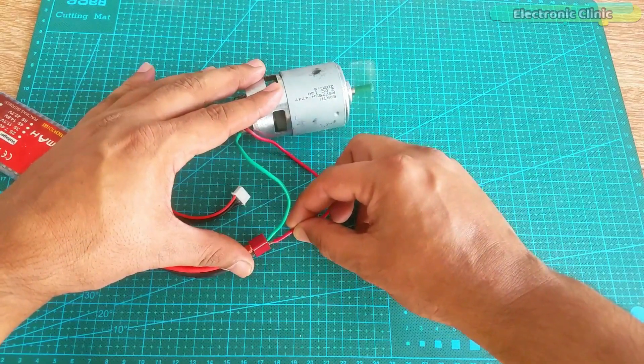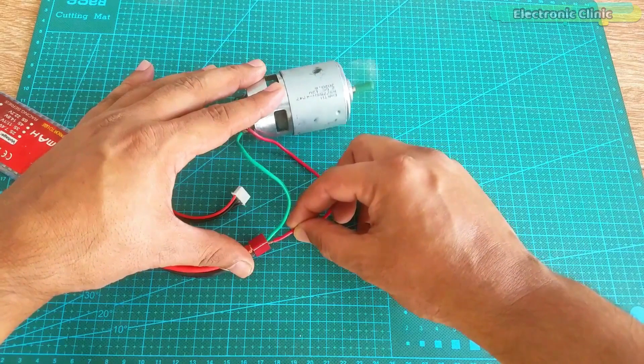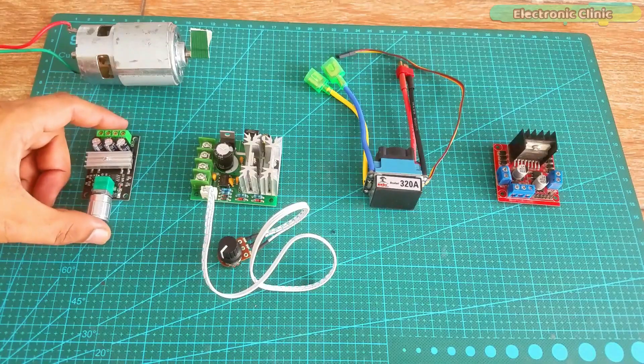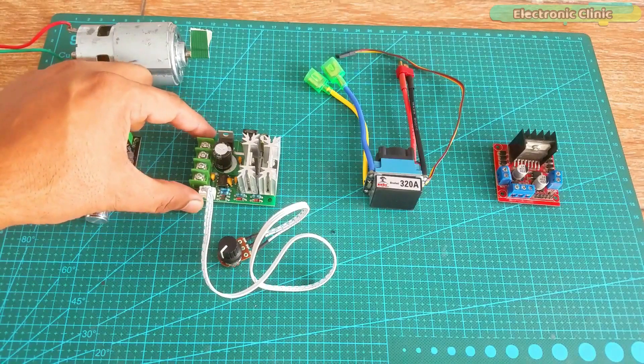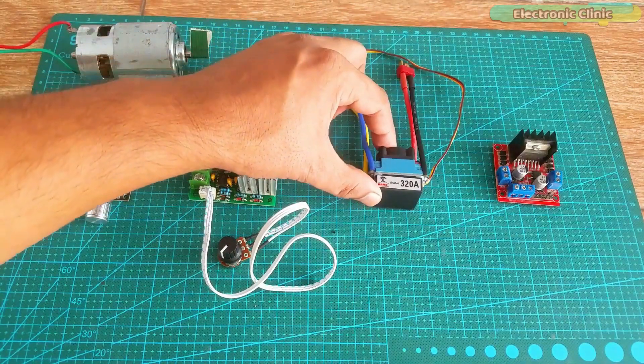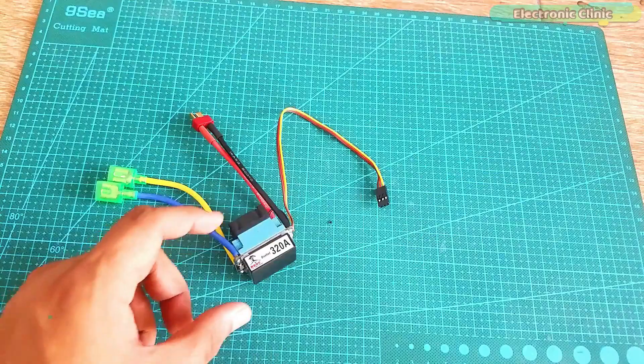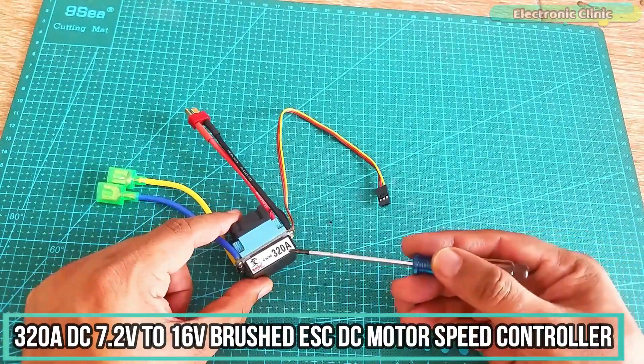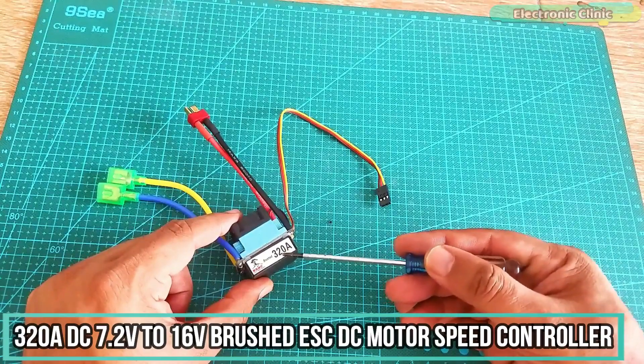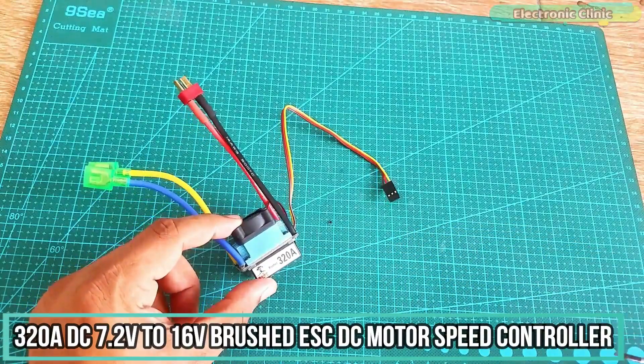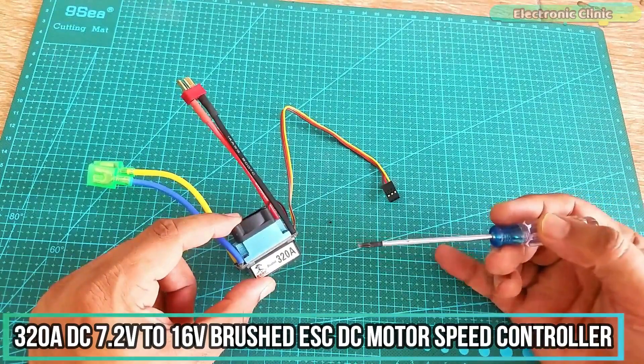Things get a little complicated when it comes to controlling the speed of 775 DC motor because in market we have different types of low cost and expensive motor drivers offering low and high current ratings. This is a 320 ampere DC 7.2 volt to 16 volts brushed ESC DC motor speed controller designed for e-bikes.